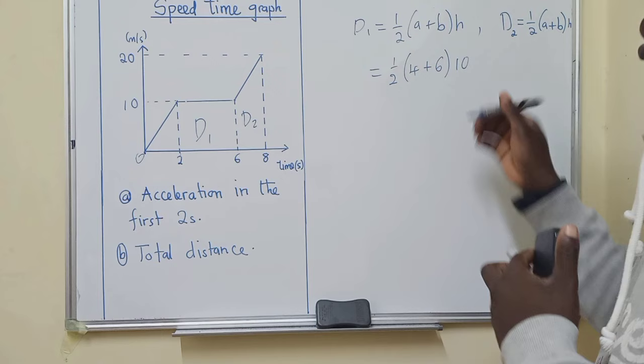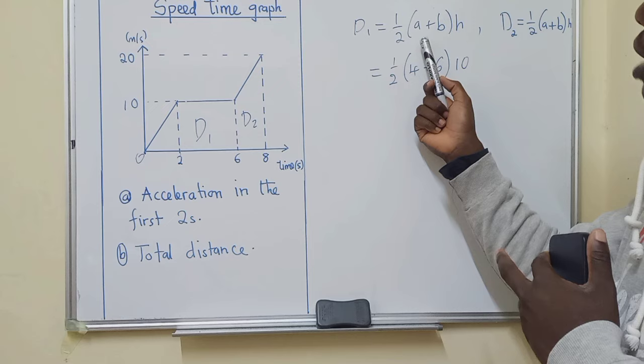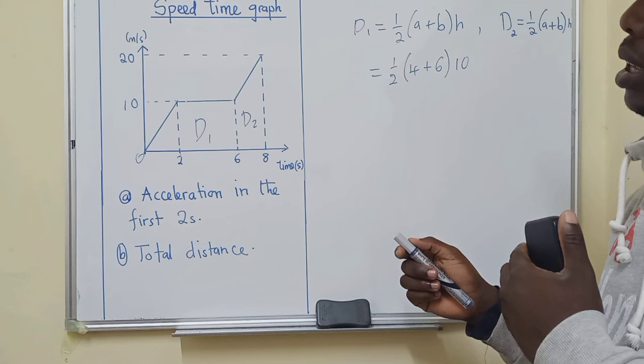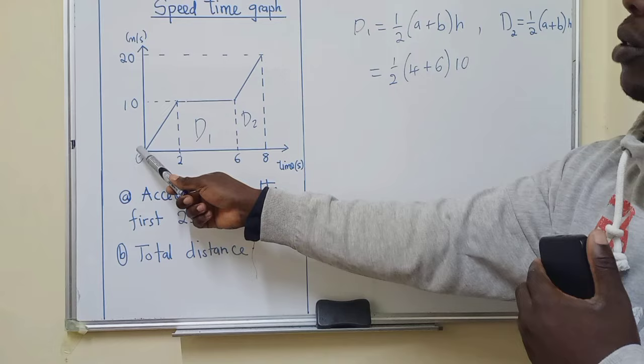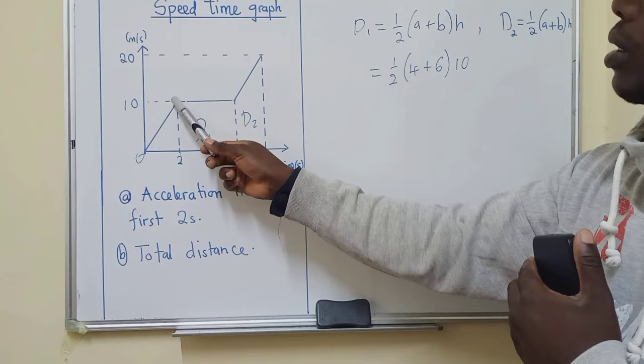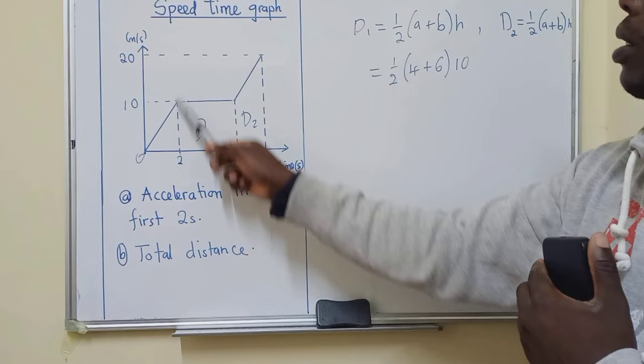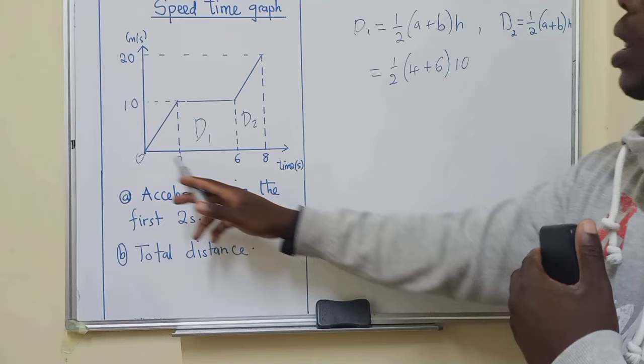So distance one, there we put here is a 4 plus here is a 6 times 10. So you may be wondering how am I identifying these? The main key or the important thing that you must be putting in your head is to identify the parallel lines of the trapezium you're dealing with. So I've identified this and this. These two are parallel lines. So what is the distance from here to here? You just get the number that is here, 6 minus the number that is here, it's 2, so 6 minus 2.